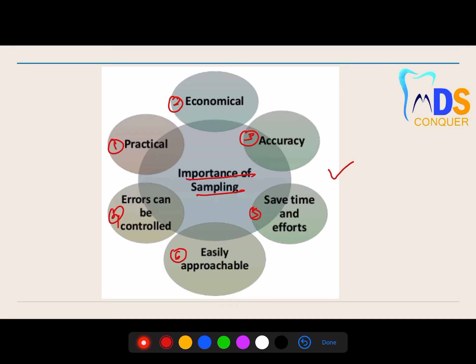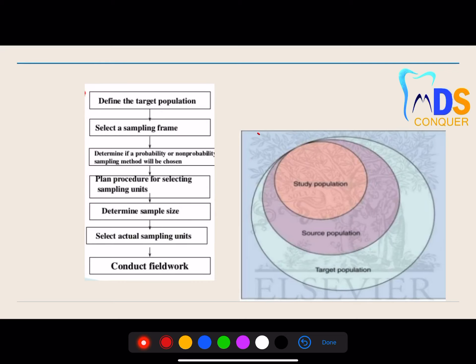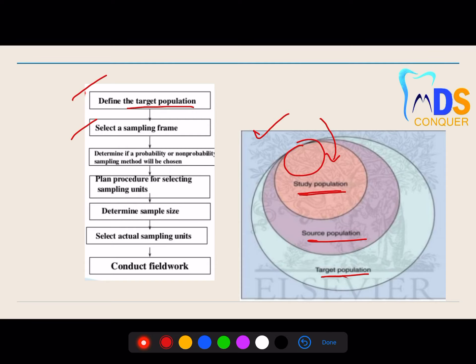Once you're done with the definition of sample, sample size, I want you to write about total target population, source population, study population, and where your sample will be within that study population. This sort of content taken directly from the textbook gives more clarity over your subject. Try to include this flowchart as well — it covers the target population and the framework before selecting a sample.